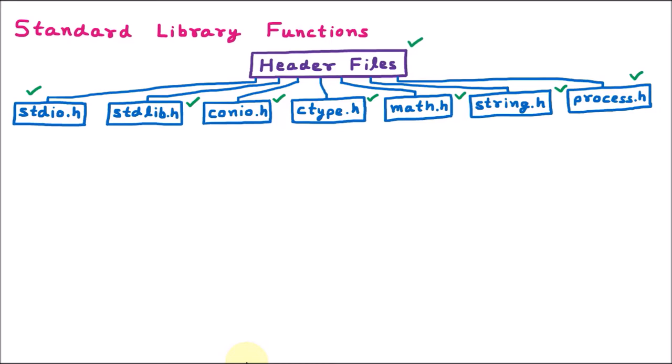We are starting with the first header file, which is stdio.h — the standard input-output header file. This header file is used for input-output operations. In stdio.h, we have various functions which work for input-output.